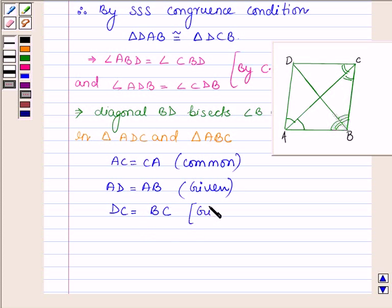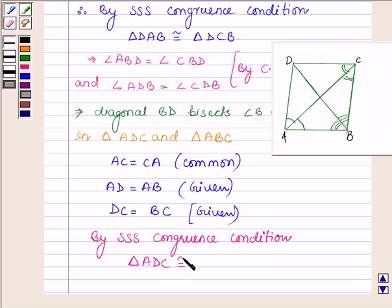Again since this is given to us, therefore by SSS congruence condition, we can say that both the triangles are congruent. That is, triangle ADC is congruent to triangle ABC.